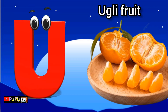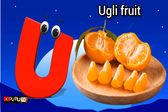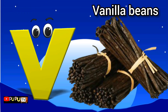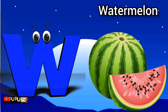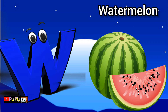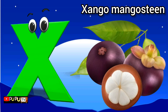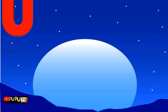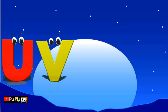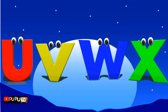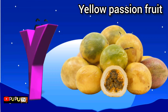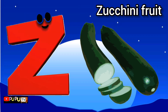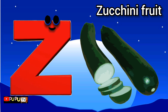U is for ugly fruit, uh-uh-ugly fruit. V is for vanilla beans, v-v-v-vanilla beans. W is for watermelon, wah-wah-watermelon. X is for xango mangosteen, z-z-xango mangosteen. Y is for yellow passion fruit, yeah-yeah-yellow passion fruit. Z is for zucchini fruit, z-z-zucchini fruit.